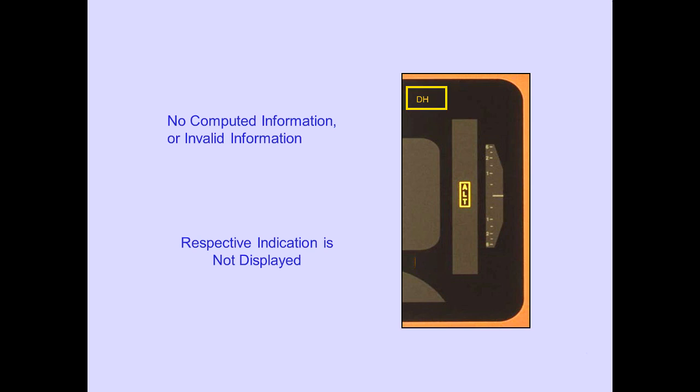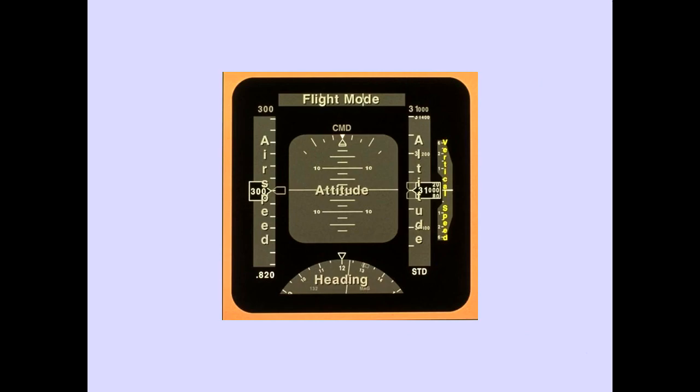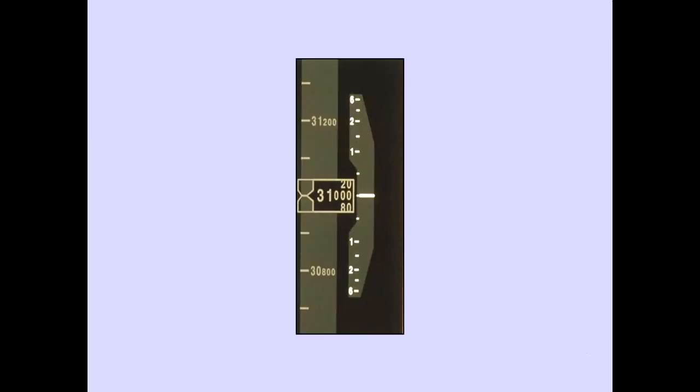Now let's discuss the vertical speed indication. The vertical speed indication is located on the right of the PFD. Vertical speed information is provided by the selected IRS and Air Data computer.